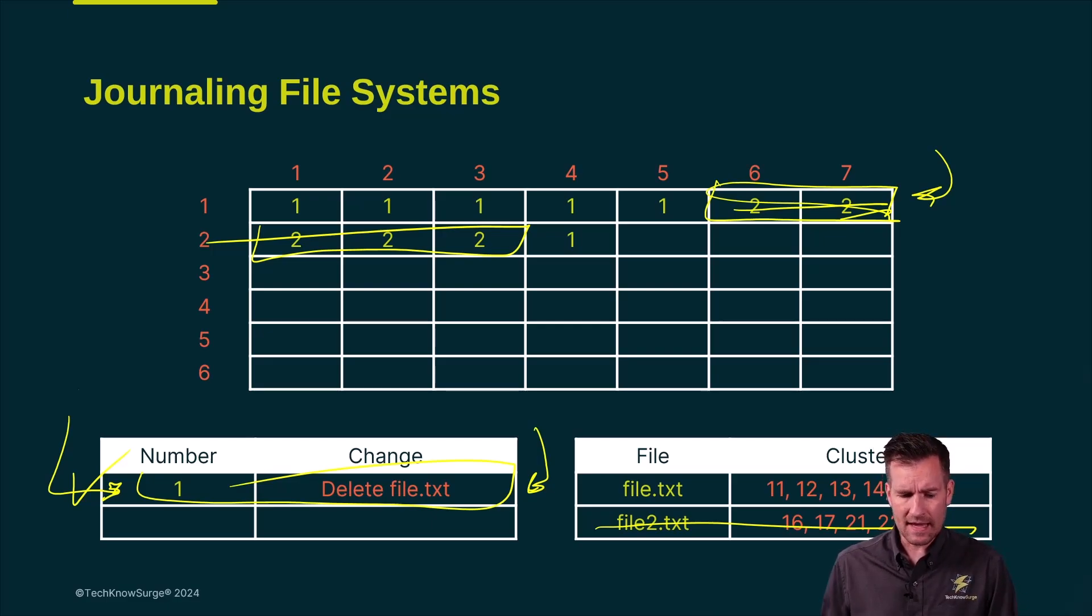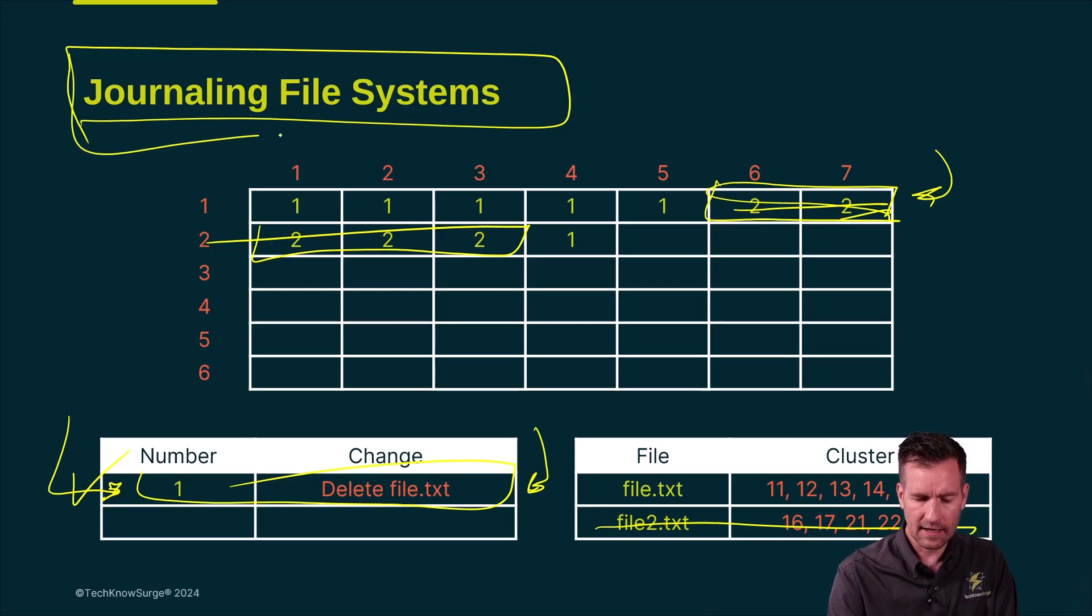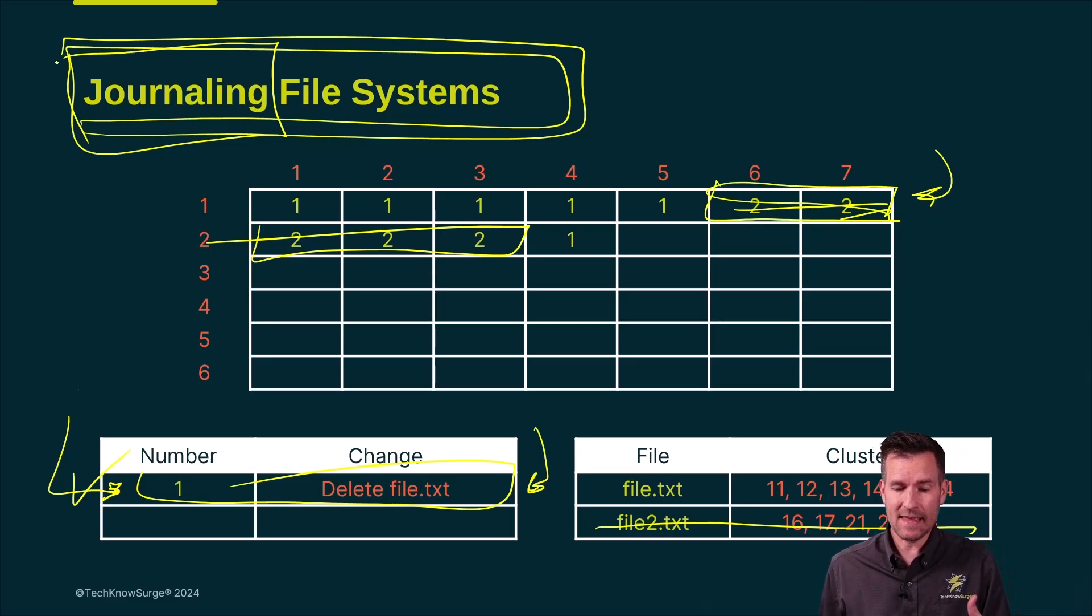So the ones that do this we call journaling file systems. We can apply journaling in many different systems like databases, but journaling file system is a file system that actually does this process of recording a journal.